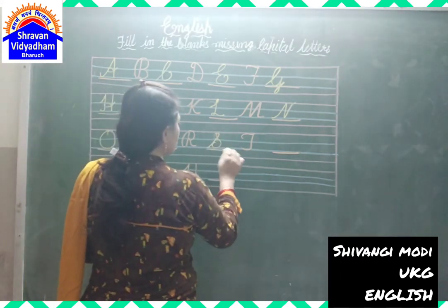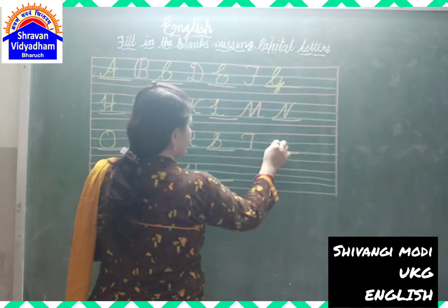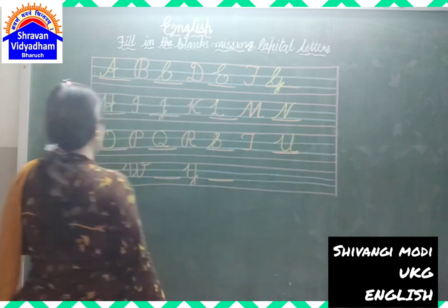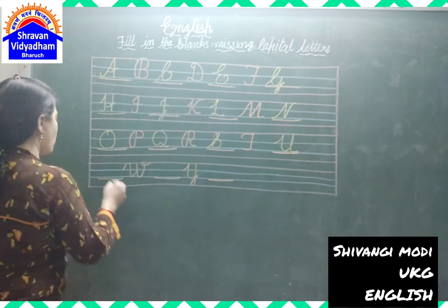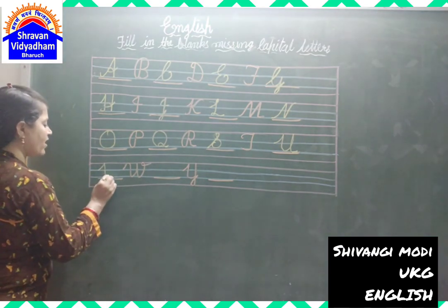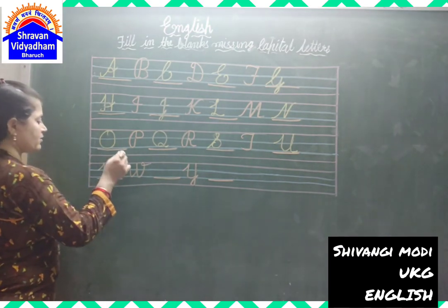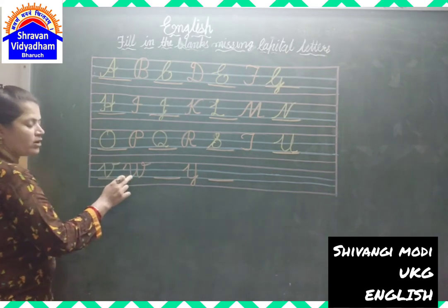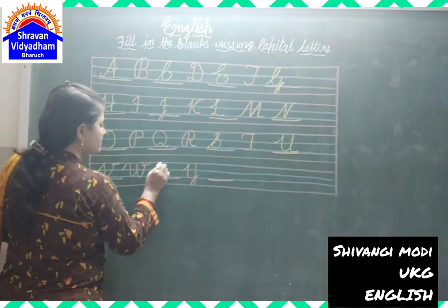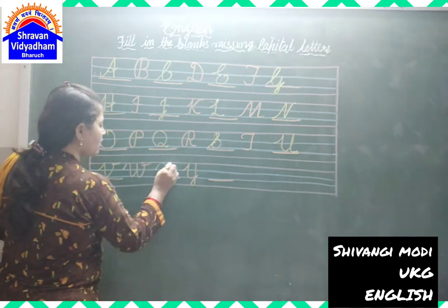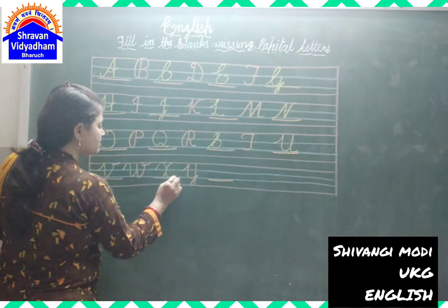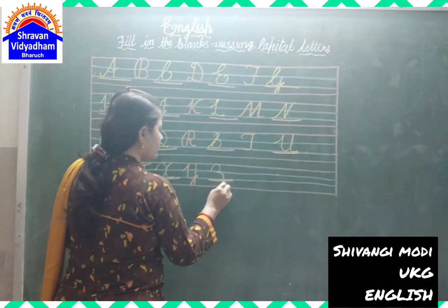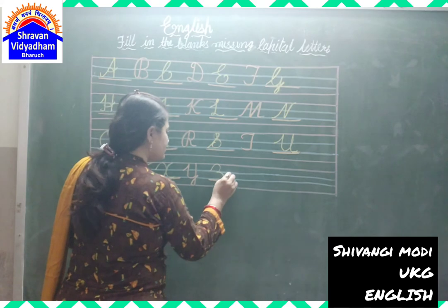S for Sun. T for Tor. U for Umbrella. B for White. W for Watch. X for X-Men's Cream. Y for Yo-Yo. And Z for Z-Gram.